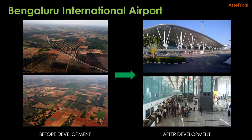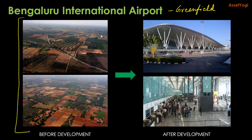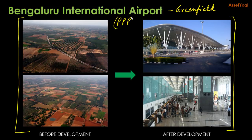Let us look at an example. These are before and after pictures of Bengaluru International Airport, which was developed as a greenfield project. Before development, the site was barren land — absolutely a greenfield site with no development. After development, it looks like the modern airport it is today. Bengaluru International Airport was developed on a public-private partnership basis where construction and development was carried out by a private consortium of infrastructure players, and operations are also being carried out by a private player — led by GVK Infrastructure. The private company developed the airport, operates it, and shares revenue with the government — that is why it is called a public-private partnership.